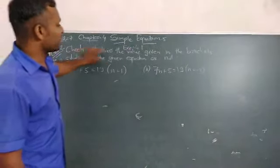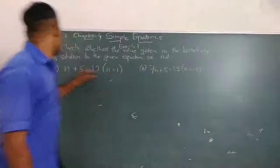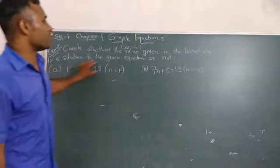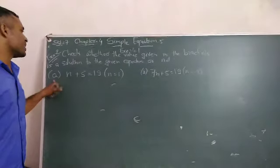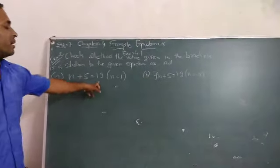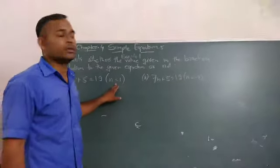Question is: Check whether the value given in the brackets is the solution to the given equation or not. First question is n plus 5 equals 19. The given value is n equals 1.